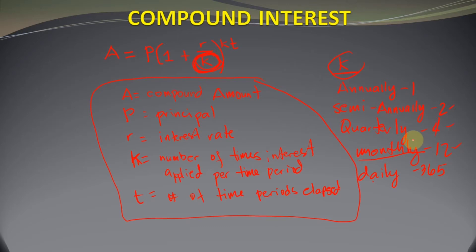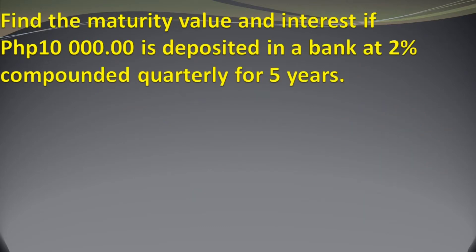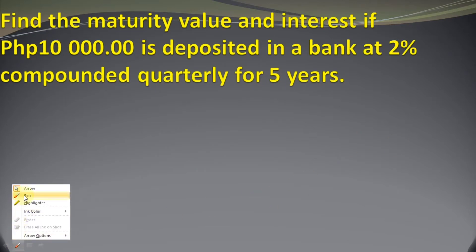Let's try an example. Find the maturity value and interest if 10,000 is deposited in a bank at 2% compounded quarterly for 5 years. First, we need to identify the given in this problem.